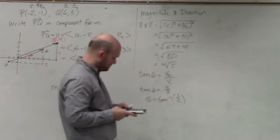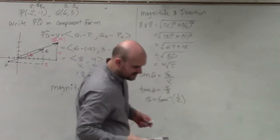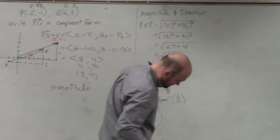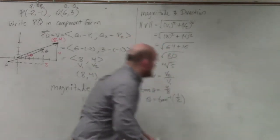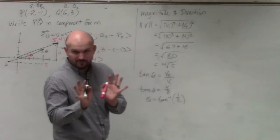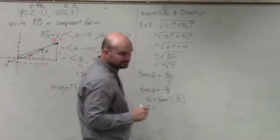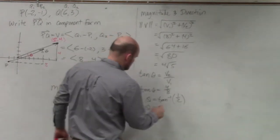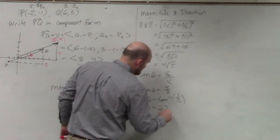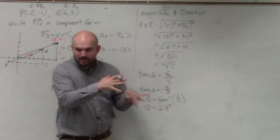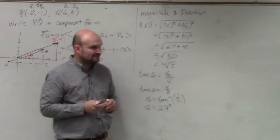That gives us 26.57 degrees. For this example, I'm going to round to the nearest degree—27 degrees.